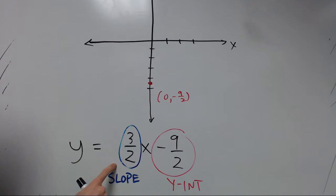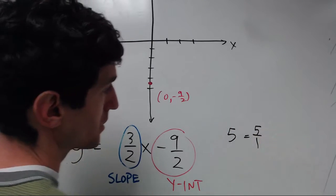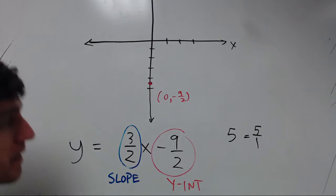Next we're going to use the slope to move to the next point. So the slope, if it's not written as a fraction, like if you had a slope like 5, you need to write it as a fraction 5 over 1. So this one's already in a fraction.